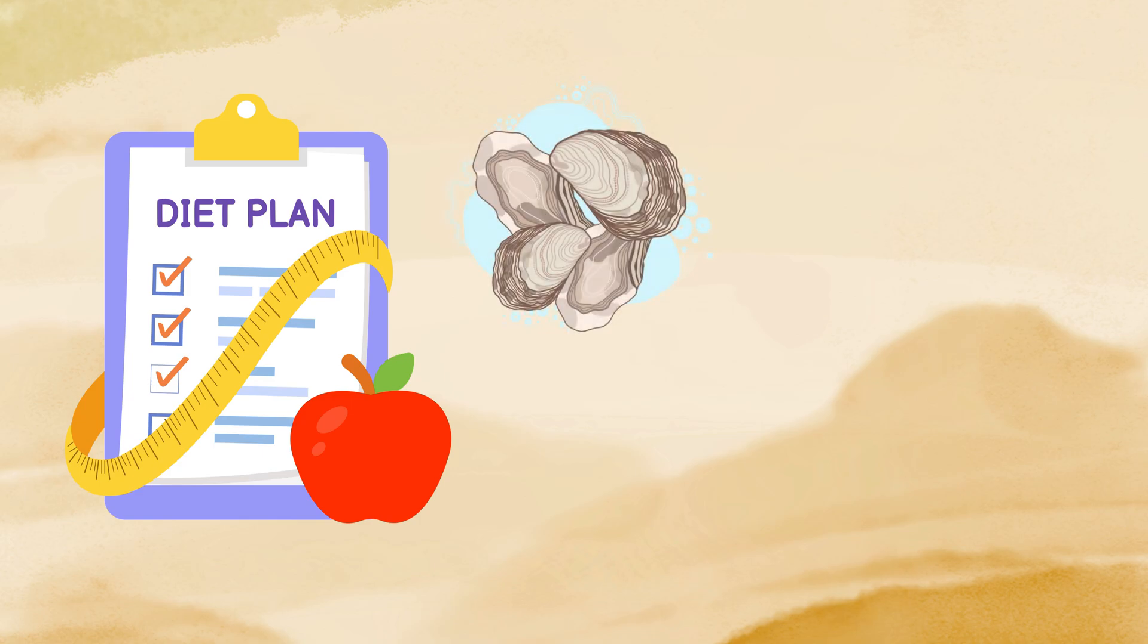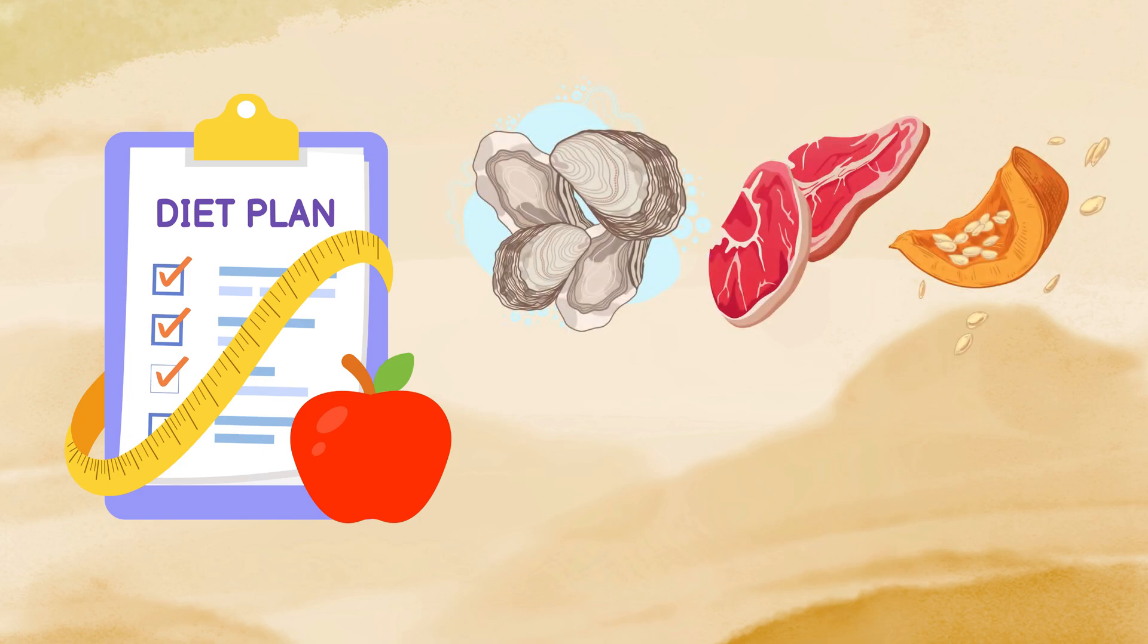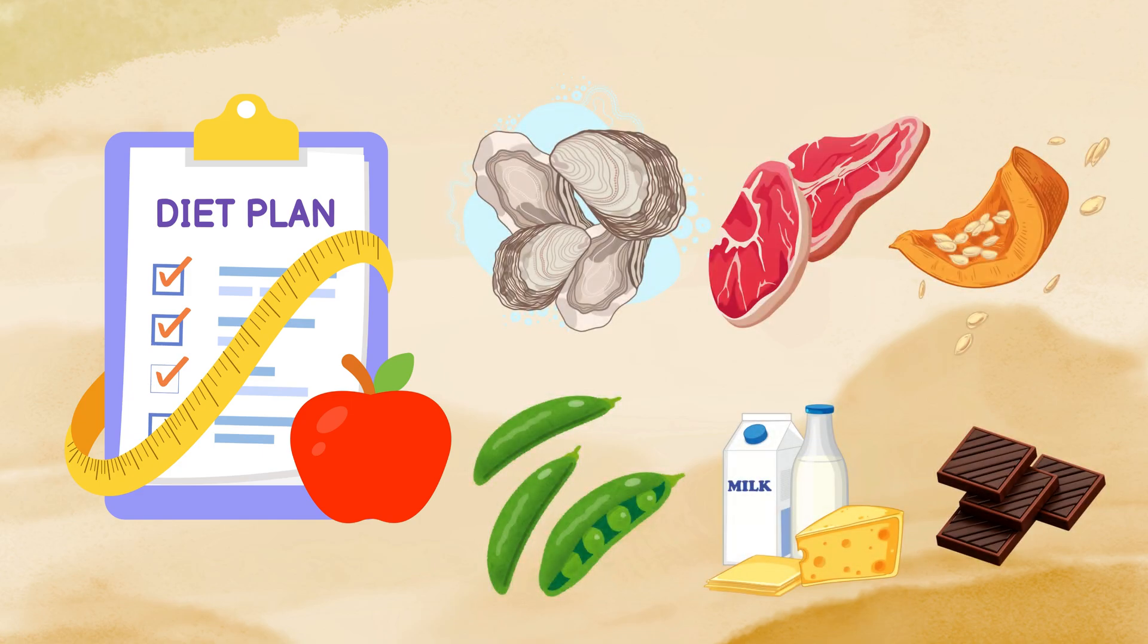Include oysters, red meat, pumpkin seeds, chickpeas, dairy products, and dark chocolate.